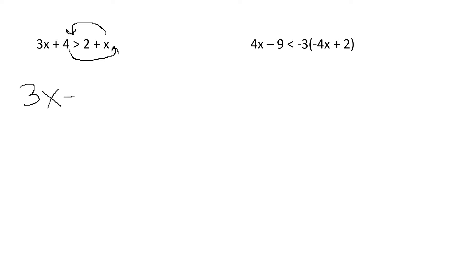3x minus x. When I move that plus over, it becomes a minus. Keep my sign. 2 minus 4. My plus becomes a minus. Simplify my like terms. So 3x minus x is 2x. 2 minus 4 is negative 2. And then to get rid of this 2, I move it over and divide. I'm dividing by a positive.